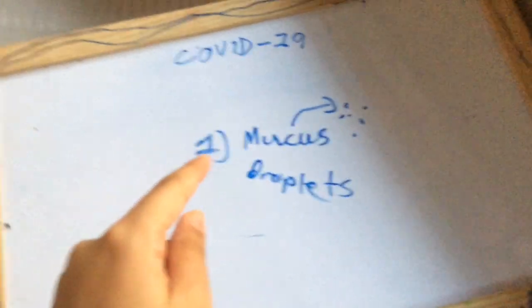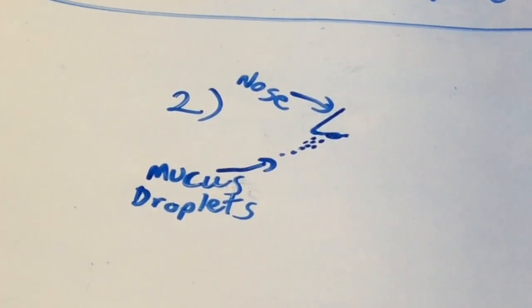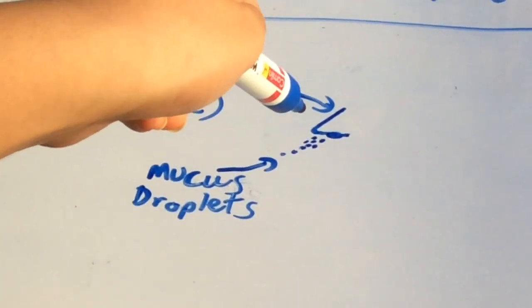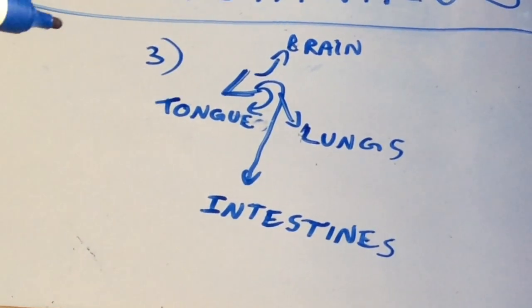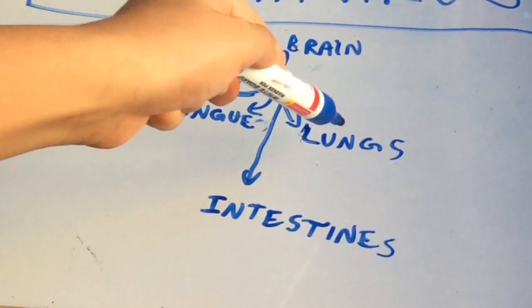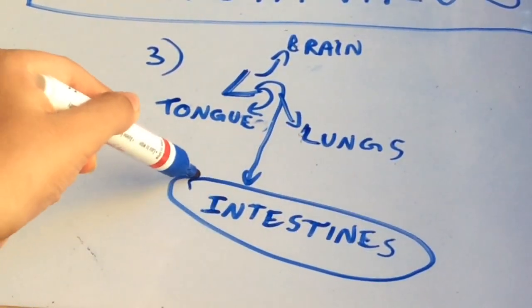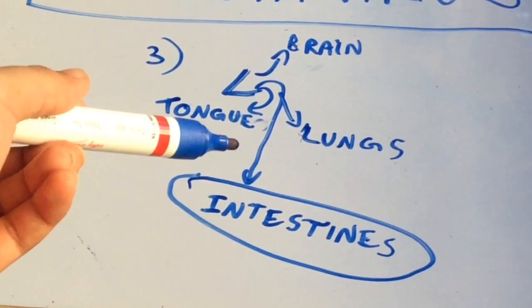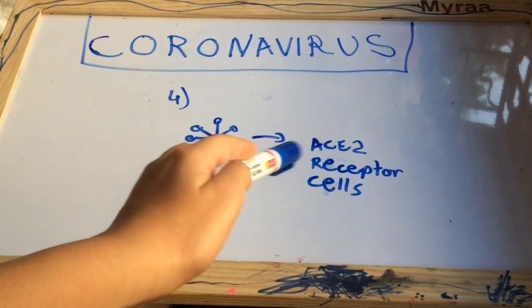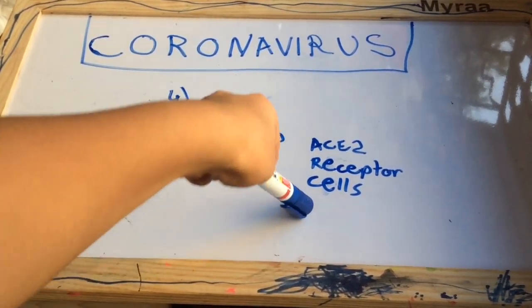The virus spreads through mucus droplets in the air. The mucus droplets enter your nose and your nasal cavities. Your nose leads to many areas — your brain, your tongue, your lungs, and your intestines. The coronavirus gets into your intestines. After that, the virus feeds on your ACE2 receptor cells, which are located in your intestines.